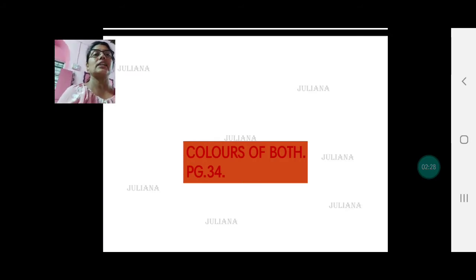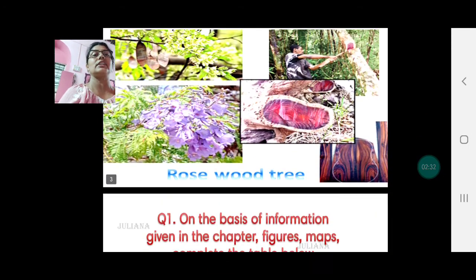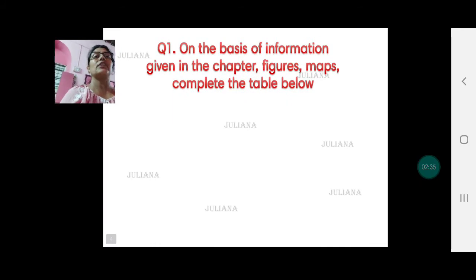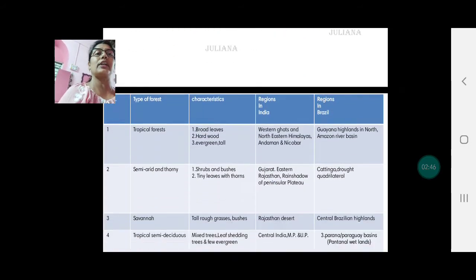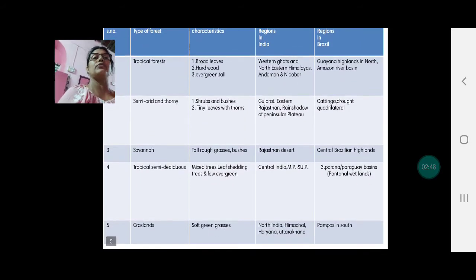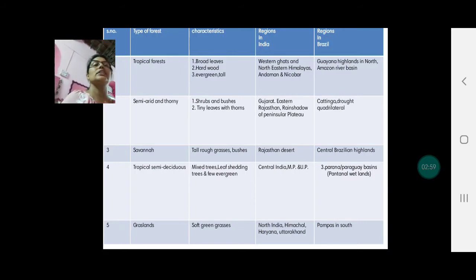With this we complete colors of both. Now we come to the question answers of chapter 5 natural vegetation and wildlife. On the basis of information given in the chapters — considering all the figures, maps — complete the table on page 36. Some of the columns are filled but the rest we need to fill. The forest types are: tropical type of forest, semi-arid and tawny forest, savannah type of forest, tropical semi-deciduous forest, and the grasslands.